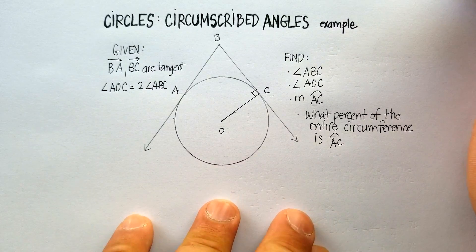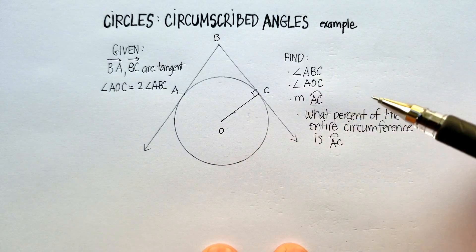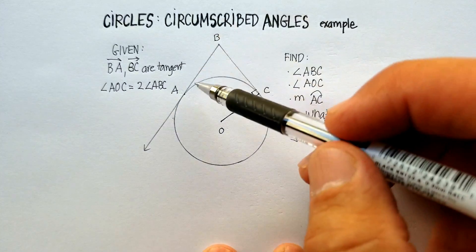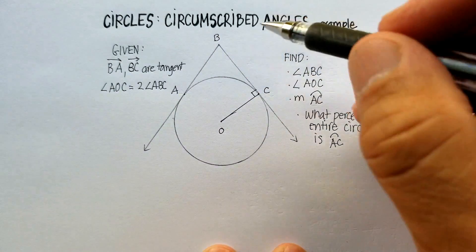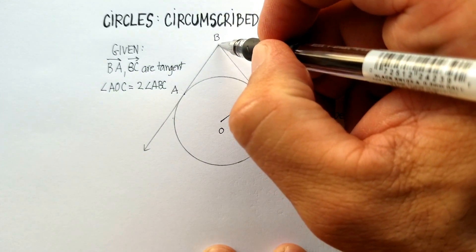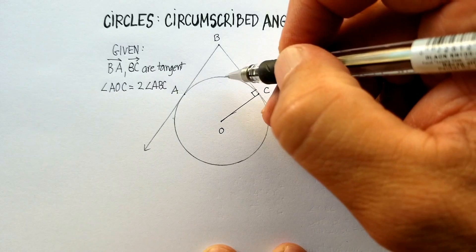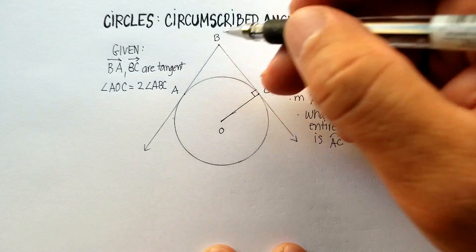Now what specifically are we trying to find? Well, it looks like we have a circle O, and we're trying to find, and we also have an angle ABC. Remember, circumscribed angle means that the vertex of the angle is outside the circle. It's not on the circumference, it's not in the center, but it is outside.